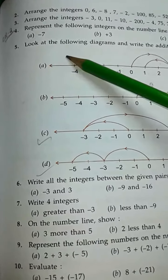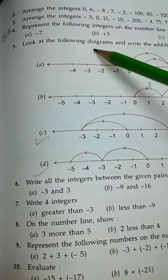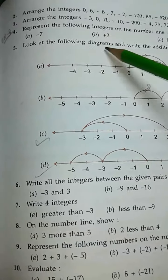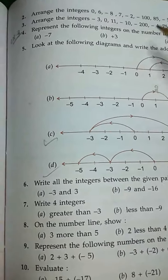Then comes to question 4: represent the following integers on the number line. Children, you just follow example 3, then you do.